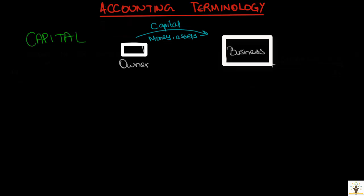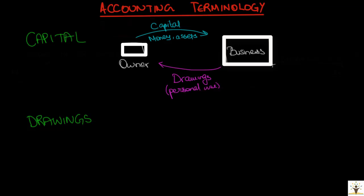The next term is drawings. Drawings is the amount withdrawn by the owner from the business for his personal use. The withdrawal could be in the form of money or any other asset. Drawings has an effect of reducing capital.